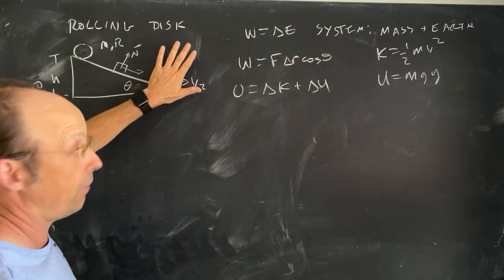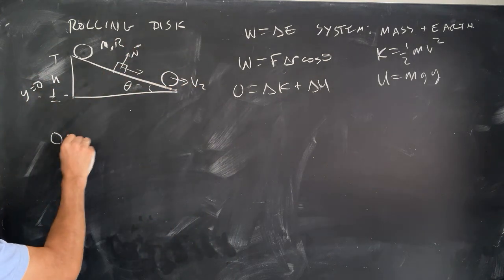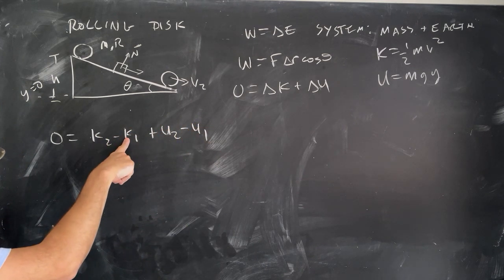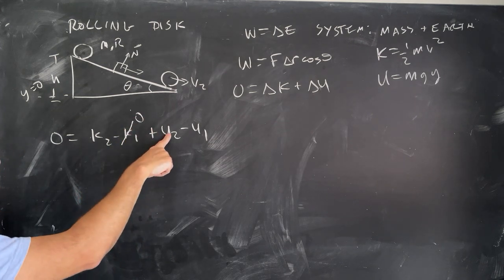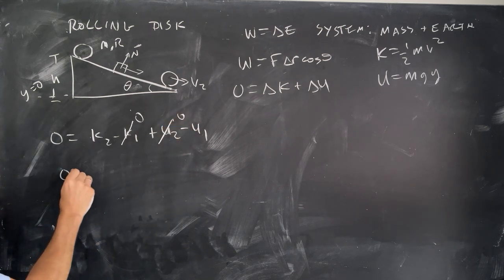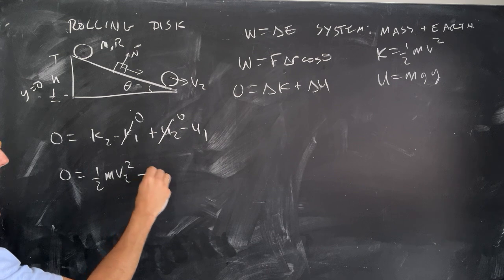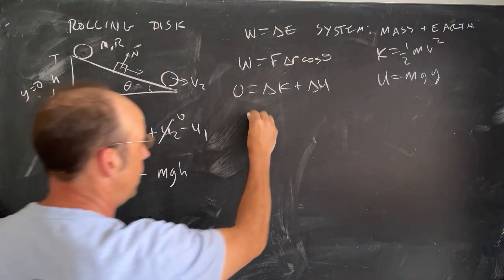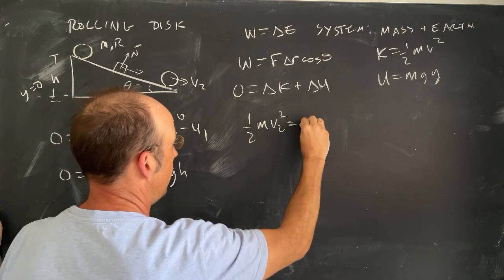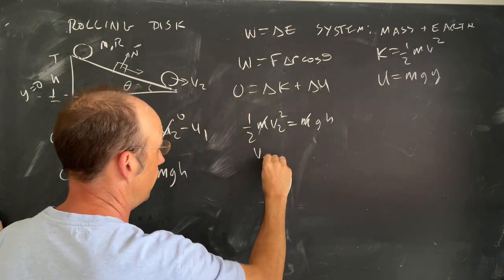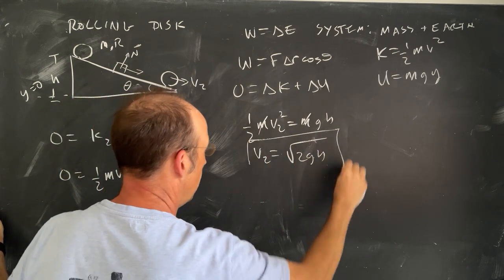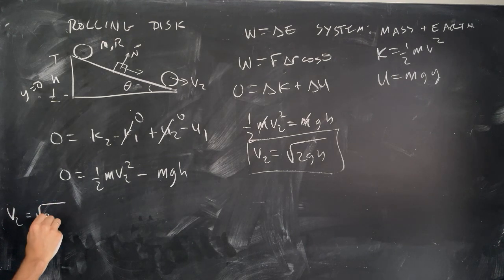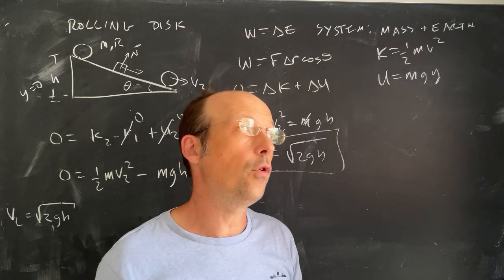I release it from rest at the top and want to find its velocity at the bottom. I write zero equals (K2 − K1) + (U2 − U1). Since it's released from rest, initial kinetic energy is zero, and potential energy at the bottom is zero. That gives one-half m v2 squared minus mgh equals zero. Mass cancels, and v2 equals the square root of 2gh. That's the sliding, not rolling, result.